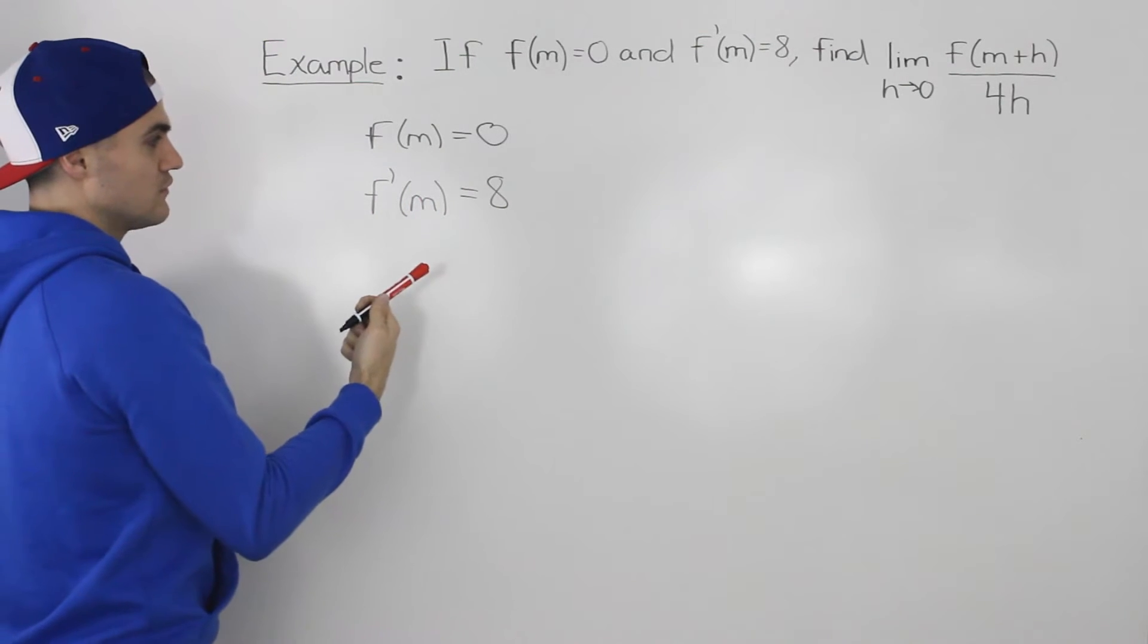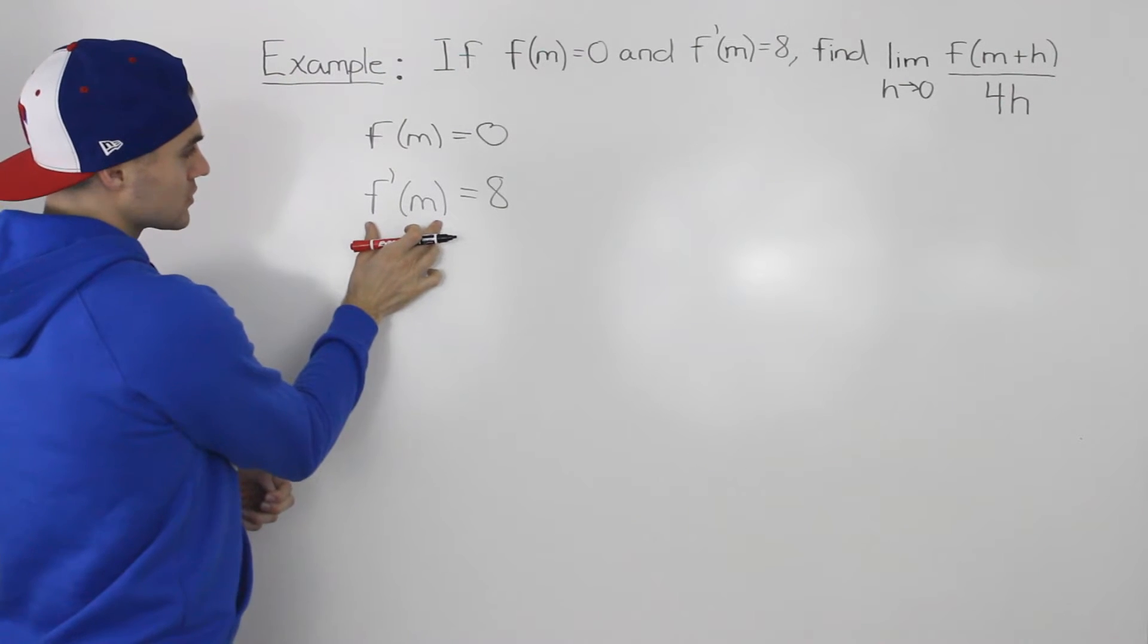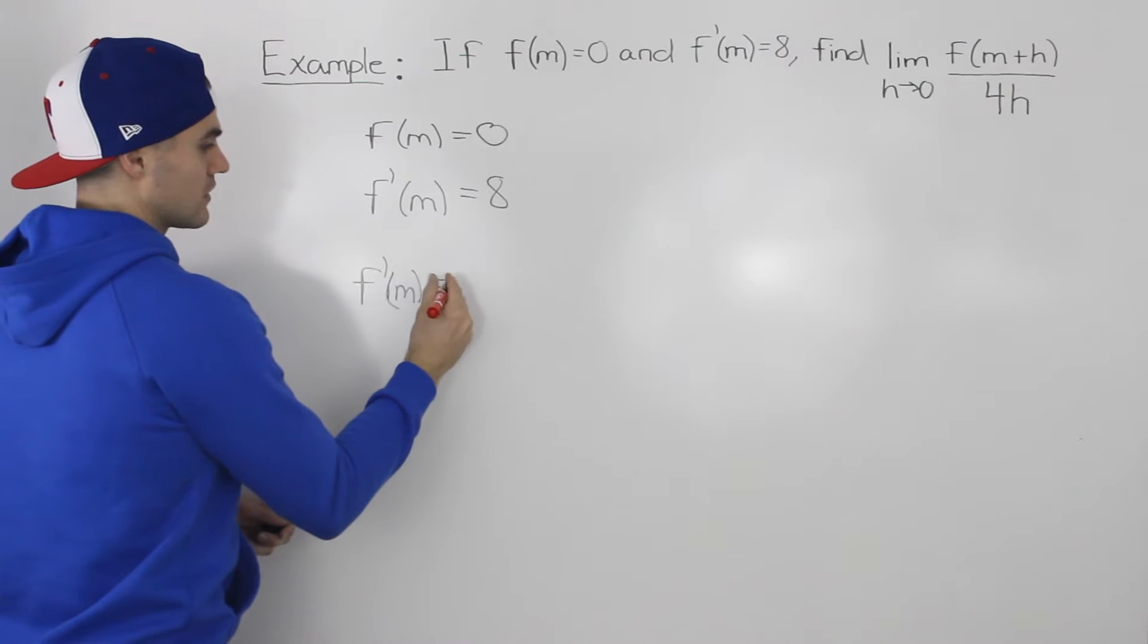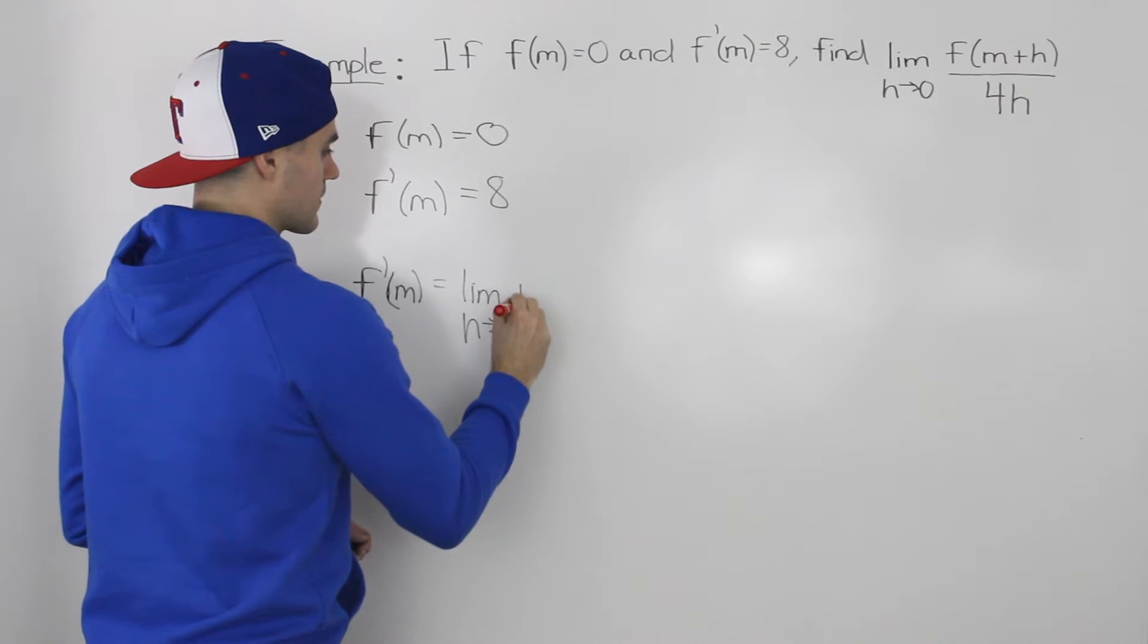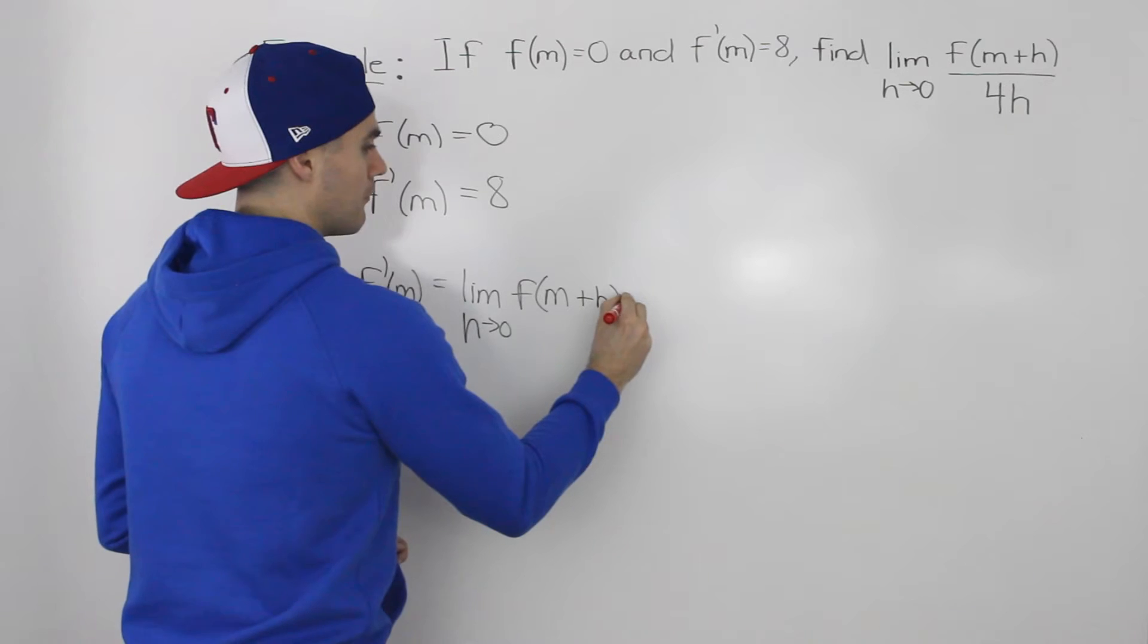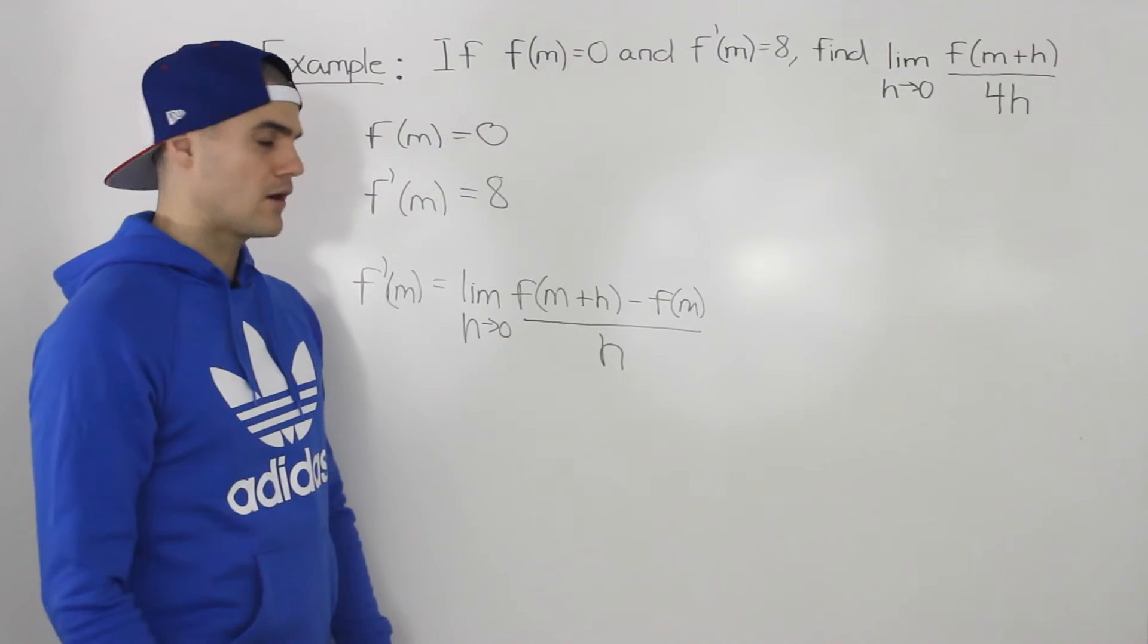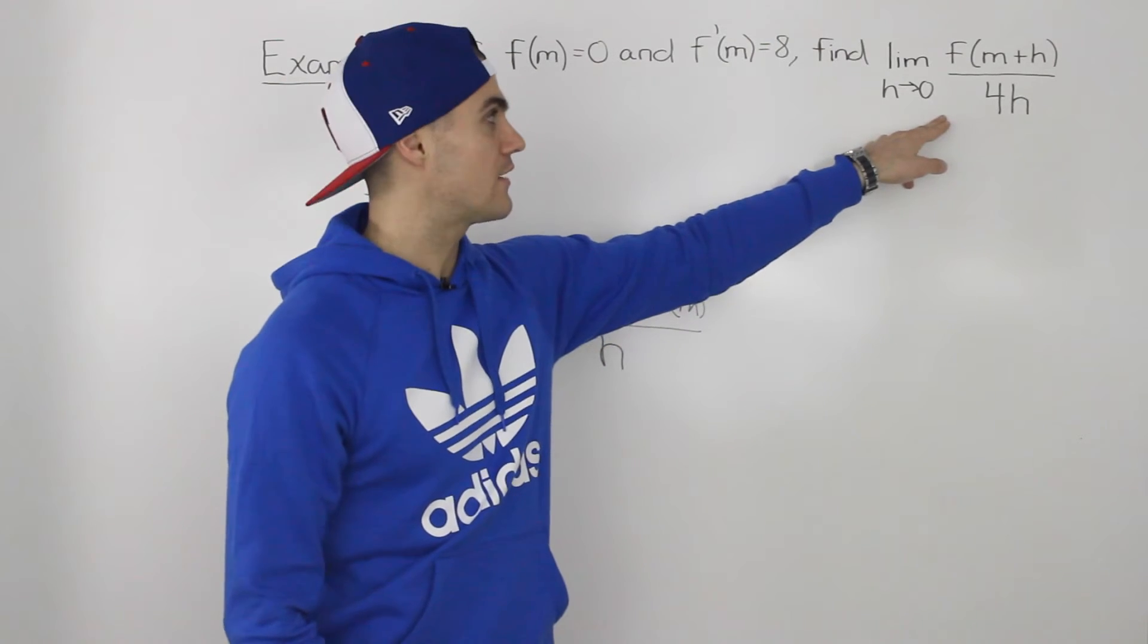So the derivative at an x value of m is equal to 8. Well, we can also rewrite this f prime m with the definition of a derivative. So it would be the limit as h goes to 0, f of that m value plus h minus f of m, and then this is all over h. And now if you notice, with this expression, we're starting to get a little bit closer to what we have to find.